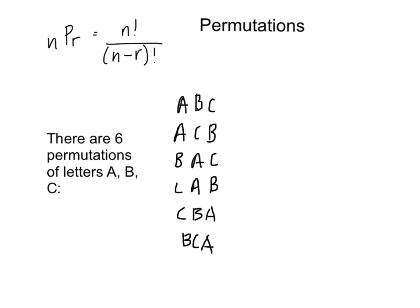We can apply the counting principle to this permutation by saying that there are three choices for the first letter, two remaining for the second letter, and finally, one for the final letter. So, the number of permutations is 3 times 2 times 1, which is 6.